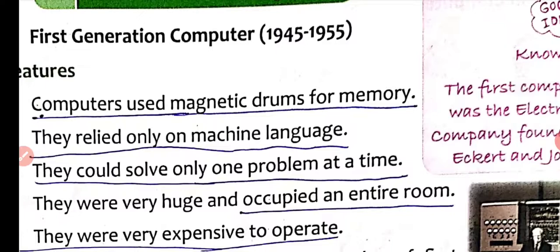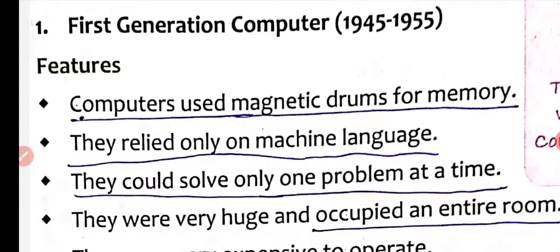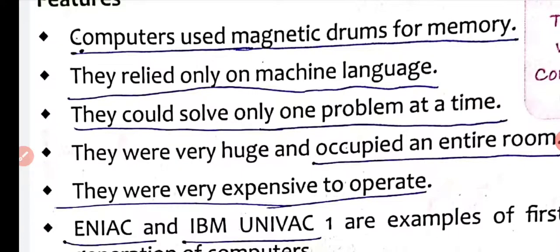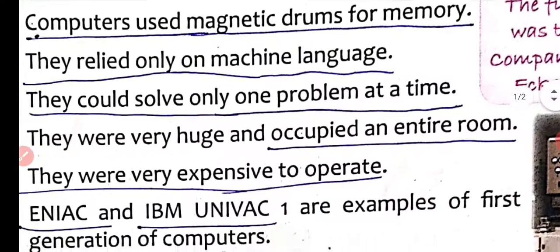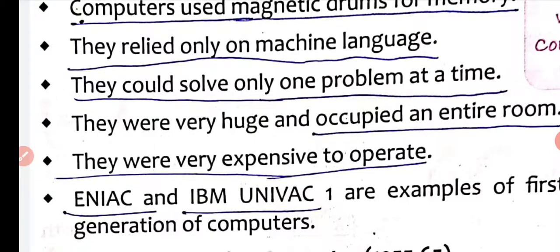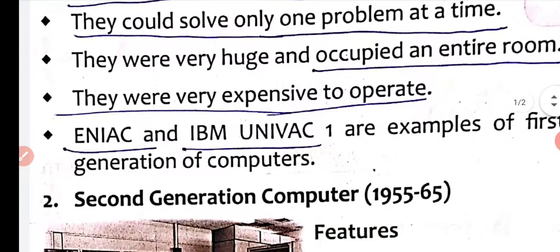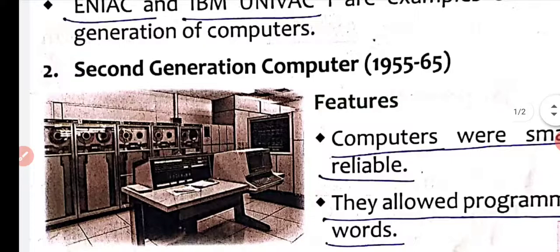First generation computers used magnetic drums for memory and only machine language. They were very huge, occupied an entire room, and were very expensive to operate. ENIAC stands for Electronic Numerical Integrated and Calculator; IBM stands for International Business Machines; UNIVAC stands for Universal Automatic Calculator. These are the first generation computer examples.